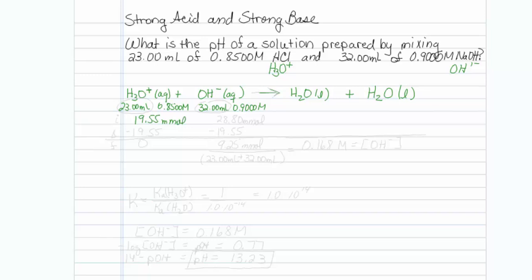Thirty-two times 0.9 gives me 28.80 millimoles.